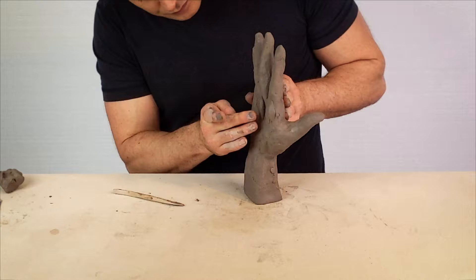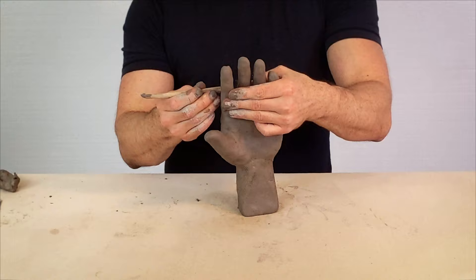Use the clay you trimmed off to build up the knuckles on the back of the hand. Mark the joints of the fingers at the knuckles.